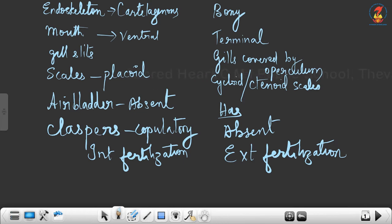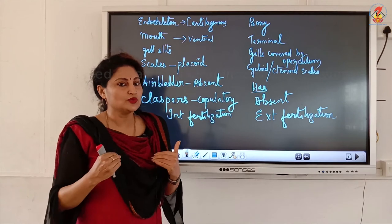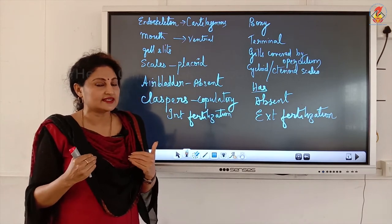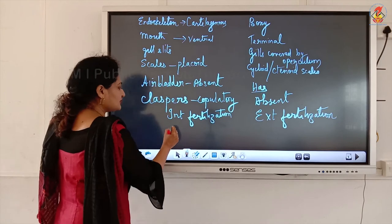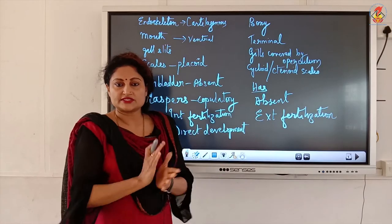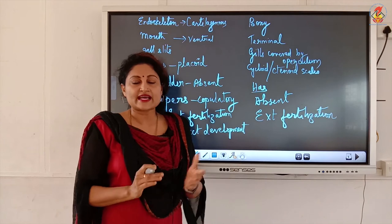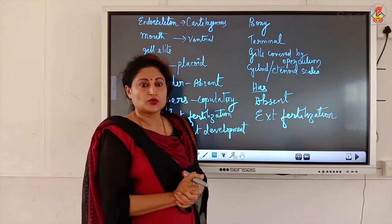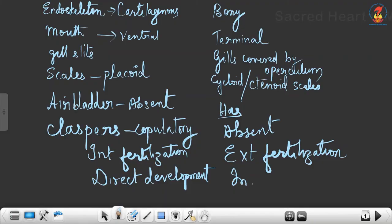As mentioned, internal fertilization goes with direct development. In humans, fertilization is internal and the young one exactly resembles the parent — direct development. With external fertilization, such as in frogs, the tadpole does not resemble the adult — that is indirect development. So external fertilization corresponds to indirect development, and internal fertilization to direct development.